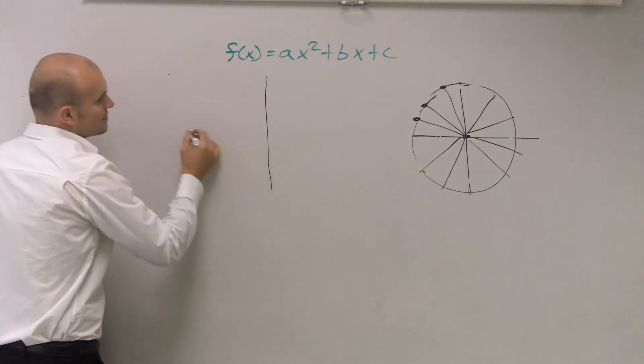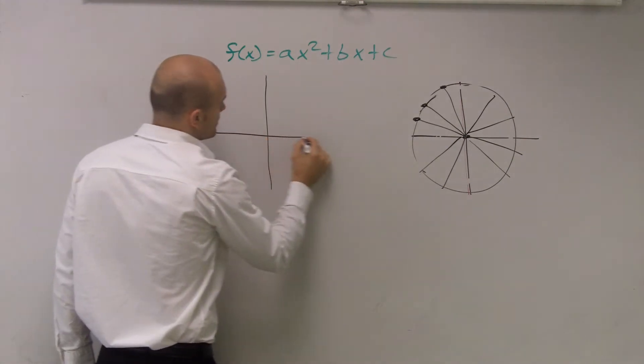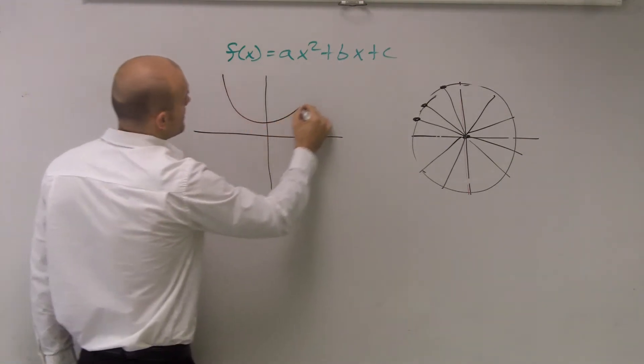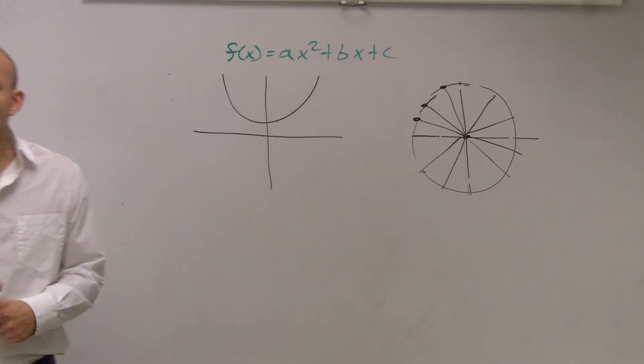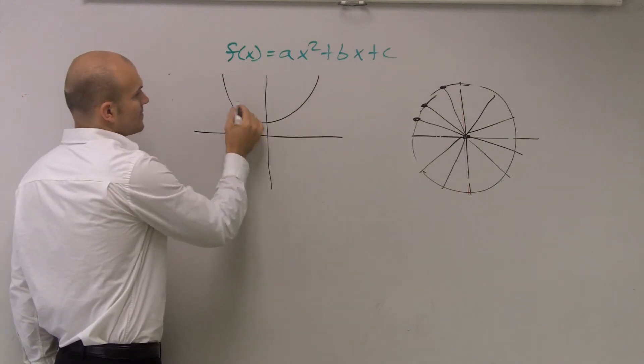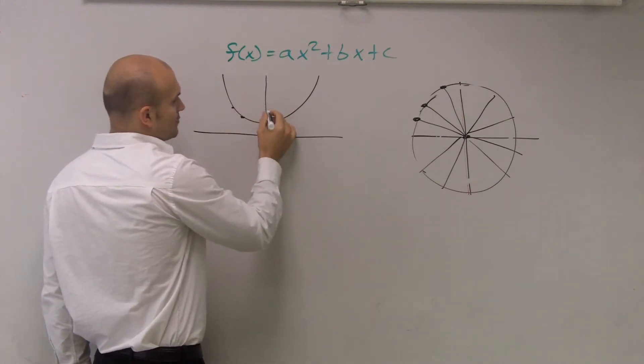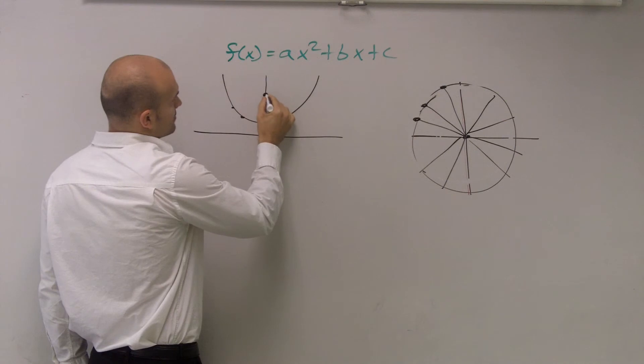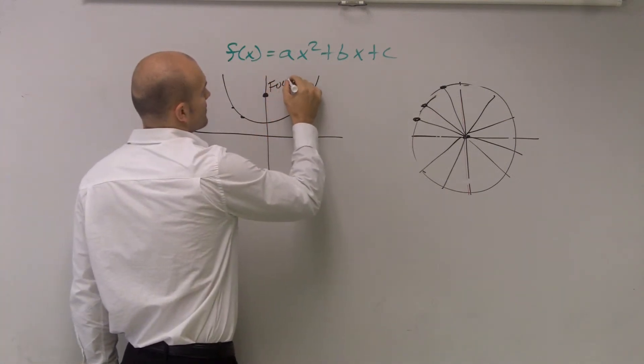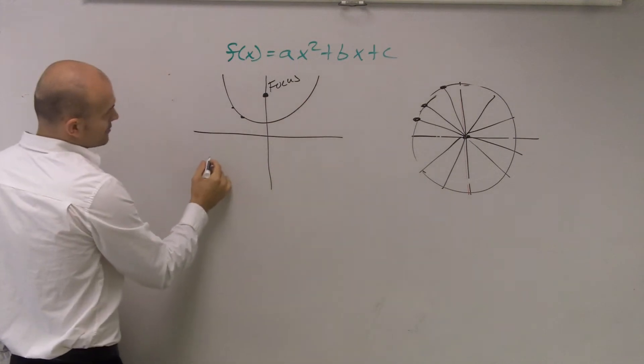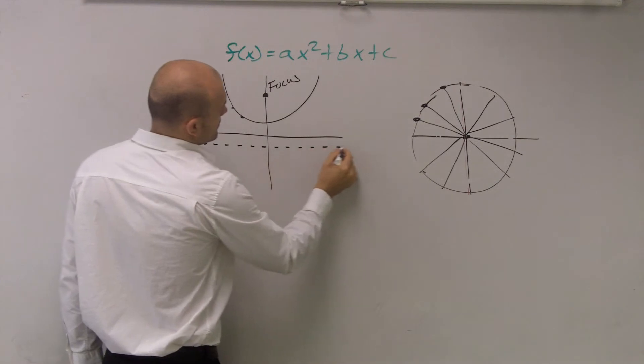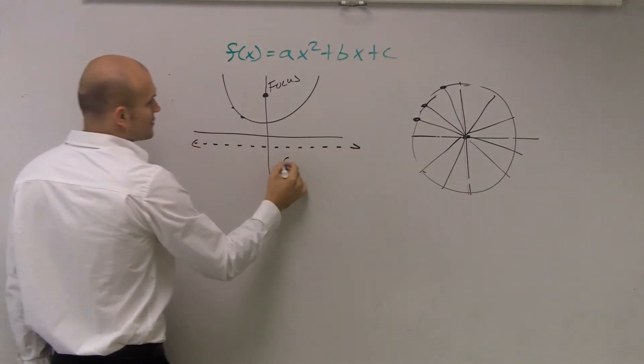Well, a parabola is going to have similar to those attributes. I'm going to draw a parabola. What we're going to talk about is a parabola is a set of points that is equal distance from one point, which we call the focus, and equal distance from the focus to another line, which we call the directrix.